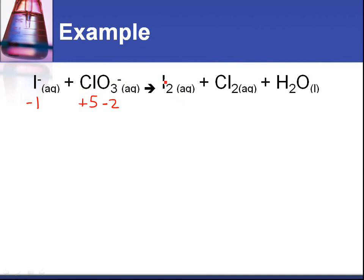On the right hand side you've got I2. Even though it's in aqueous solution it's still an element so that's going to be zero. You've got Cl2, an element, so it's going to be zero. And you've got water which has oxygen negative two and hydrogen plus one.